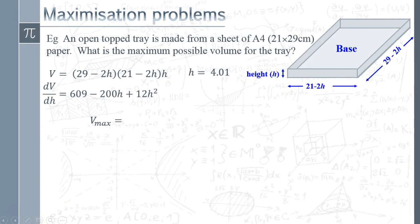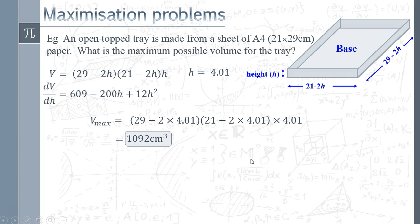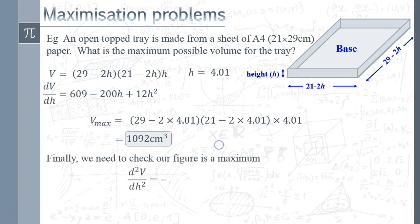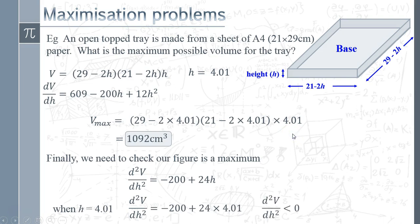With h = 4.01, we substitute back into the volume formula and multiply out to find the maximum possible volume is 1092 cm³. Finally, to confirm this is a maximum and not a minimum, we differentiate a second time to get the second derivative. Substituting h = 4.01 gives a value less than zero — which confirms it is a maximum. So we have found the maximum possible volume for the tray.